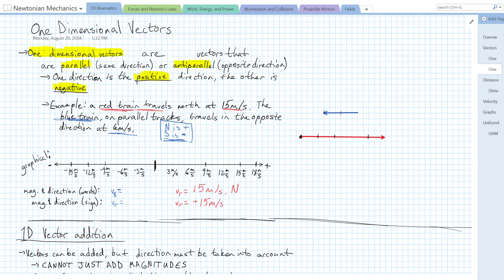Same with the blue train. Since it's going south, it's going in the negative direction at 6 meters per second. So the magnitude is 6 meters per second and the direction is south. That's how we write it with words. Or with just numbers, we would write negative 6 meters per second.